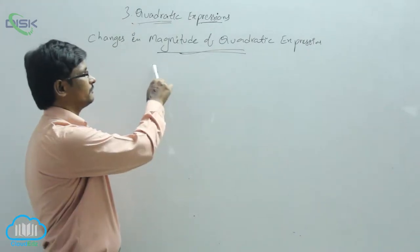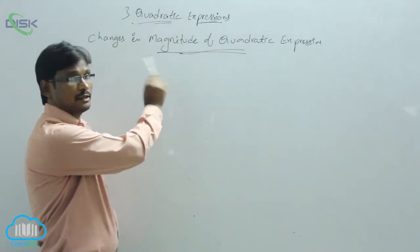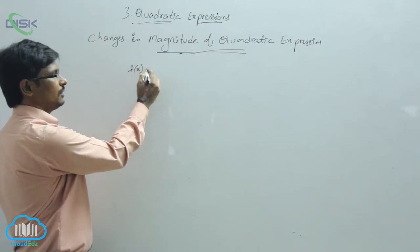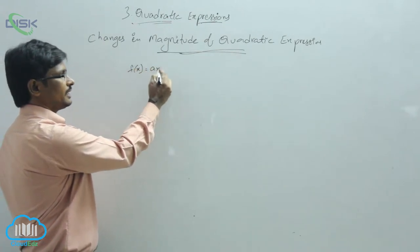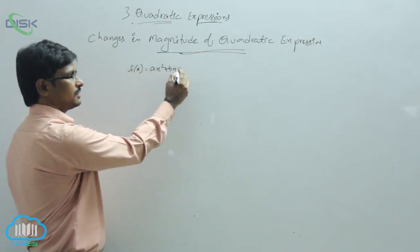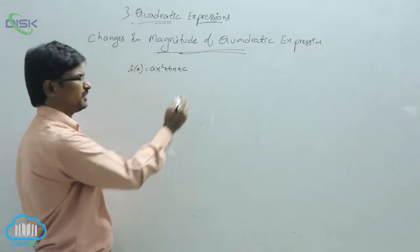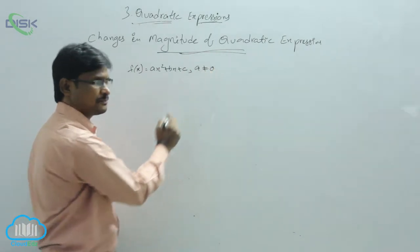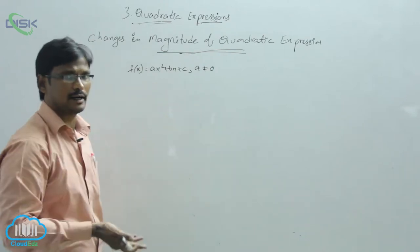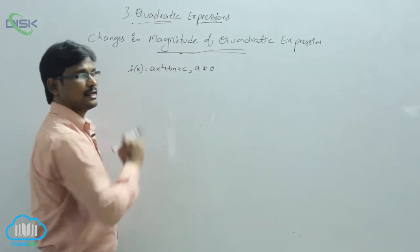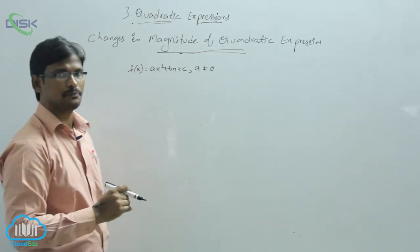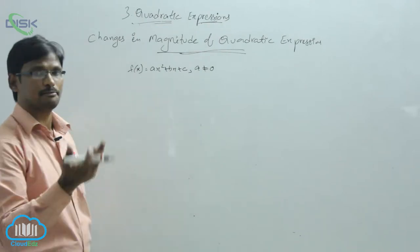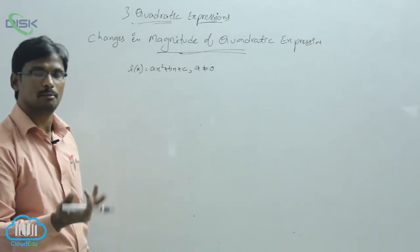Now we will see the changes in the magnitude of a quadratic expression. Let f(x) = ax² + bx + c be a quadratic expression, where a is not equal to 0. If a is equal to 0, it is not a quadratic equation. So the obvious case is a ≠ 0, which means a may be positive or maybe negative.